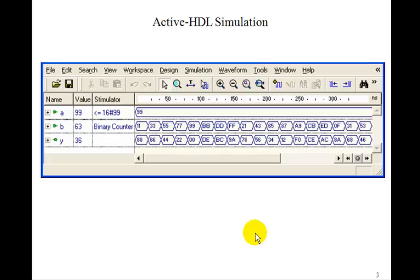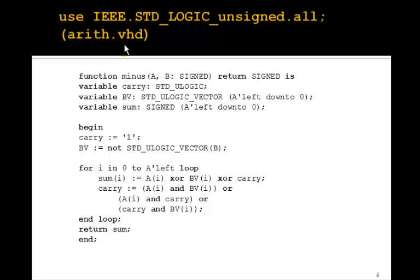Now, you might wonder how VHDL actually implements this minus sign. Remember, we saw that the plus sign was implemented by making an n-bit adder using full adders, just exactly the way we did. And if you go look in the IEEE unsigned VHD program, the arith one really, you'll find the function minus, which gets called when you execute a minus sign. And let's see how they do it.